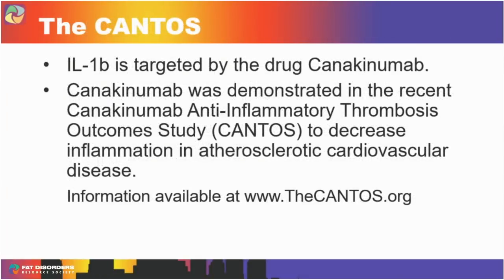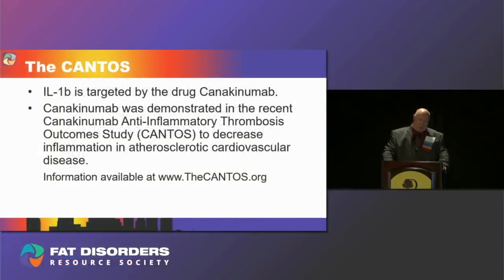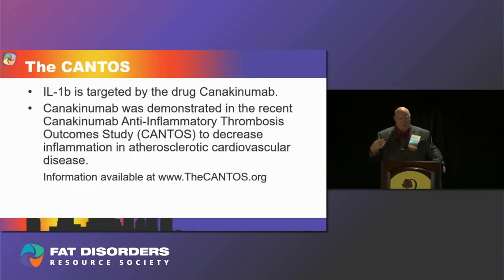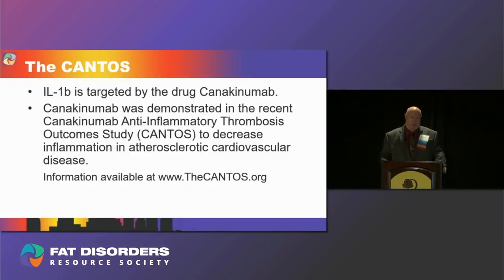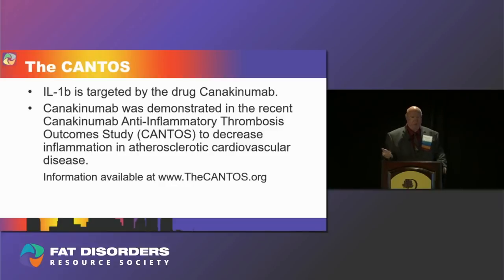IL-1 beta is targeted by the drug canakinumab. Canakinumab was recently demonstrated in the Canakinumab Anti-Inflammatory Thrombosis Outcome Study — a landmark clinical trial — which showed that not only does inflammation play a significant role in atherosclerotic cardiovascular disease, but that inhibiting the interleukin-1 beta pathway with canakinumab resulted in a significant decrease in inflammation and a significant decrease in recurrent cardiovascular events, independent of lipid lowering. So not only cholesterol, but also inflammation, plays an important role in atherosclerotic cardiovascular disease.